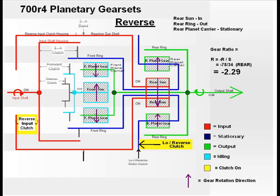Reverse is the only gear that applies the reverse input clutch. This clutch ties the input drum to the rear sun gear. In addition, the low reverse clutch is applied, making the rear planet carrier stationary. This time, the front planetary gears are idling and have no effect on the gear ratio.